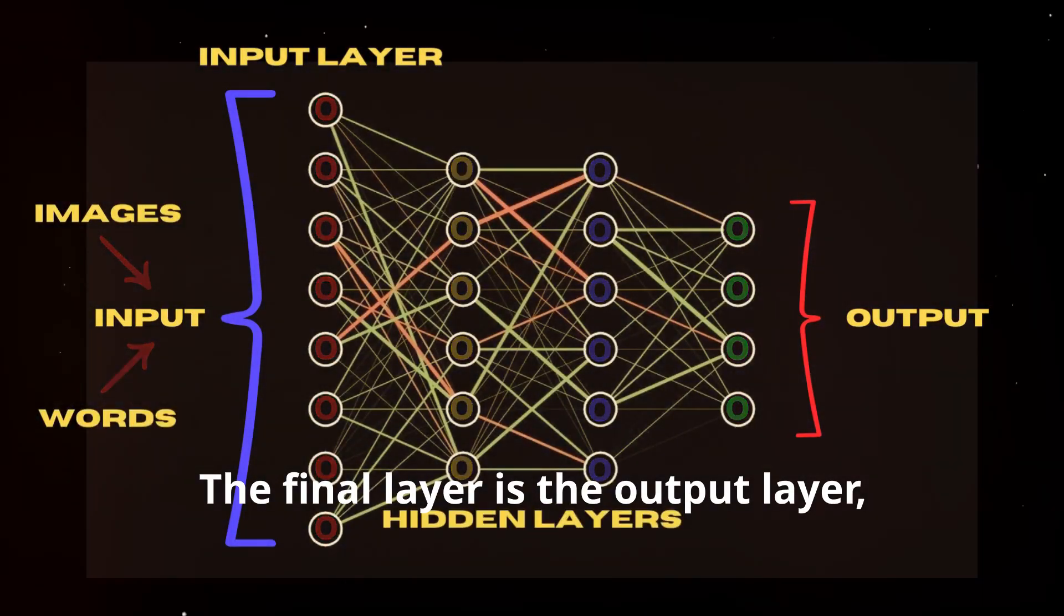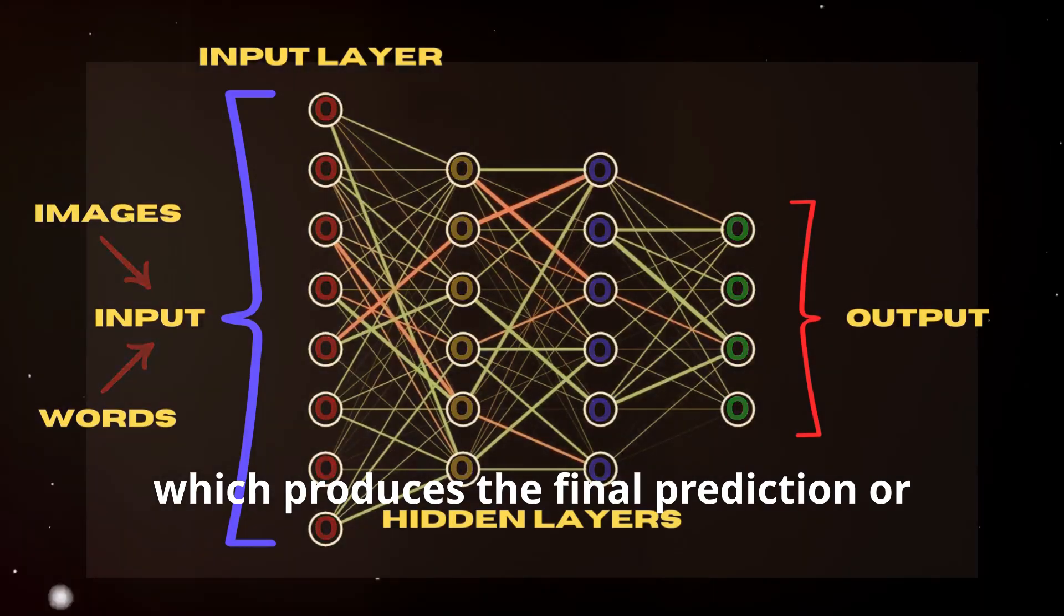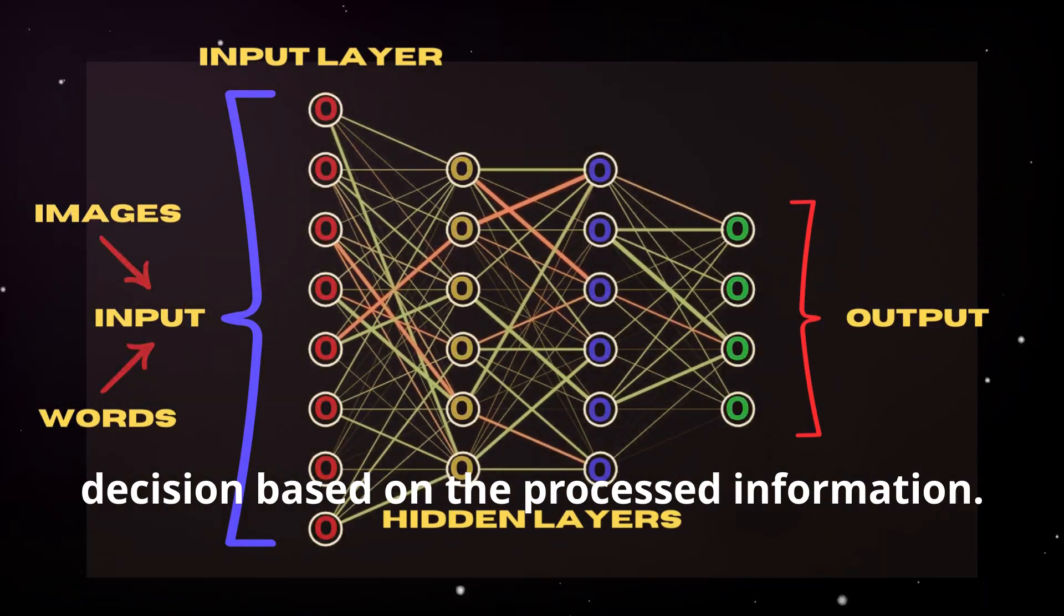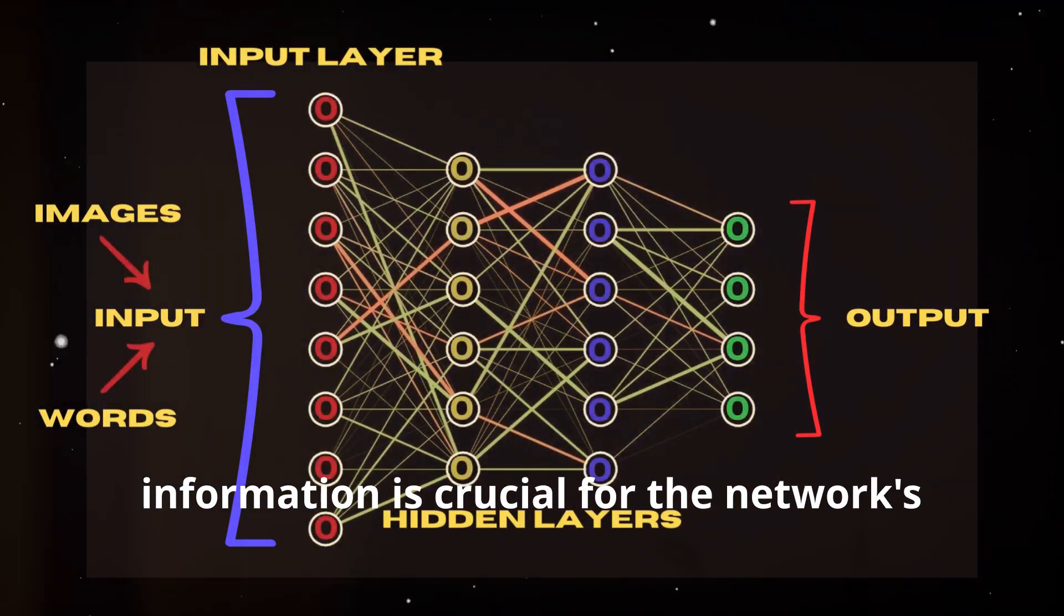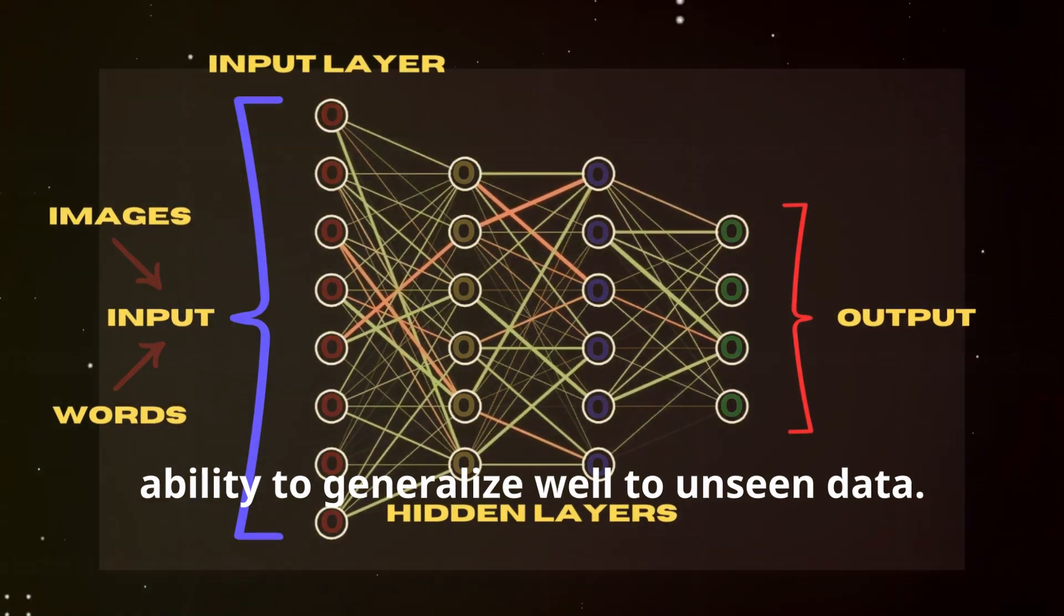The final layer is the output layer, which produces the final prediction or decision based on the processed information. This hierarchical representation of information is crucial for the network's ability to generalize well to unseen data.